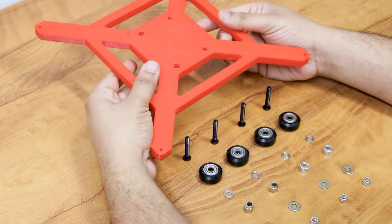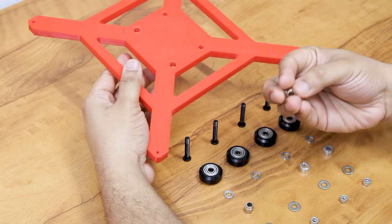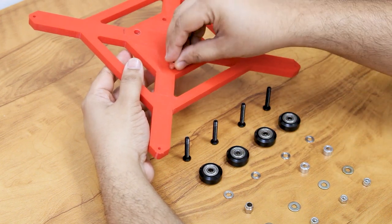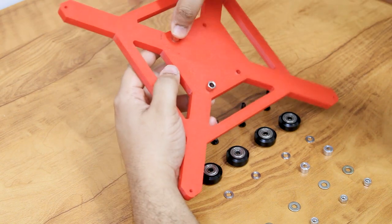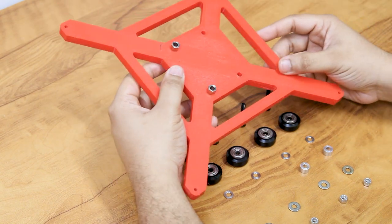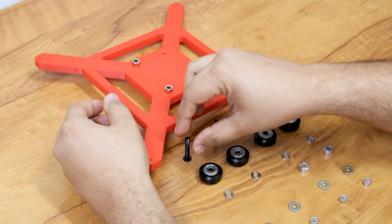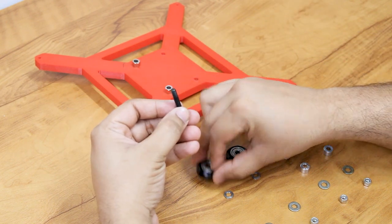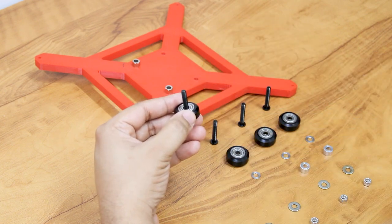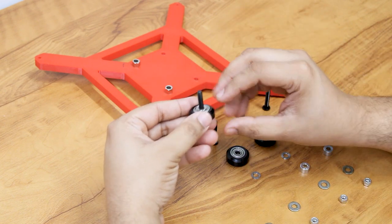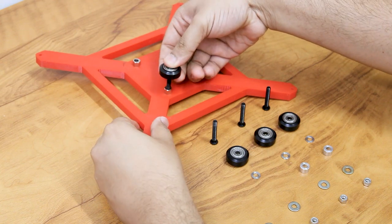To assemble the V wheels, we insert the eccentric spacers in the larger holes. Take the M5 low profile bolt, insert the V wheel, insert a spacer and then insert the wheel through the eccentric spacer.